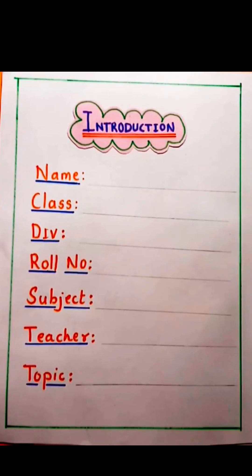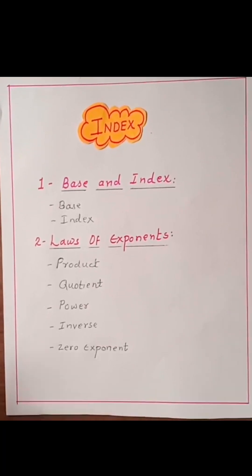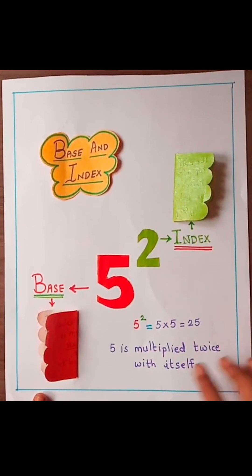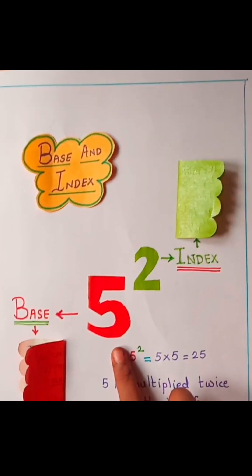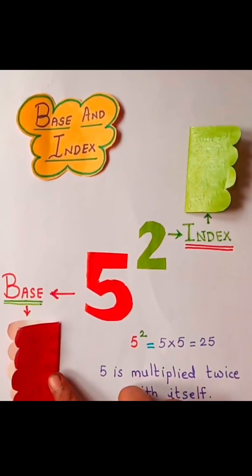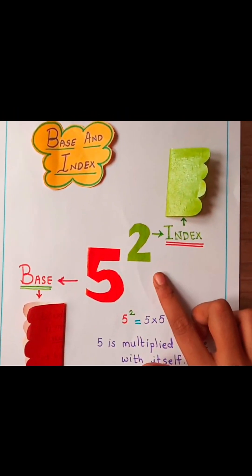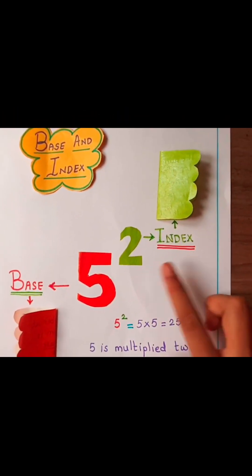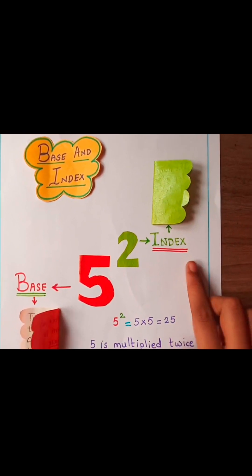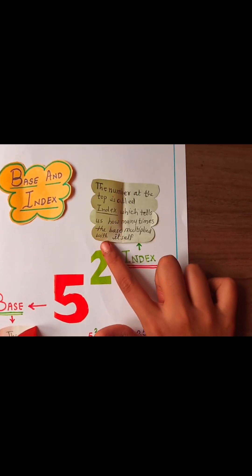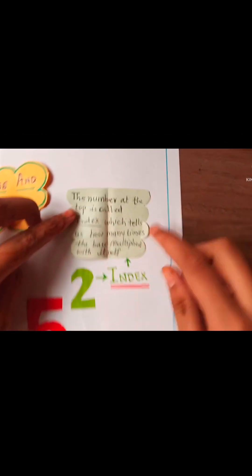This is the introduction page and the index page. In the expression 5 raised to 2, the index is 2 and the base is 5. Here is a description of the index.